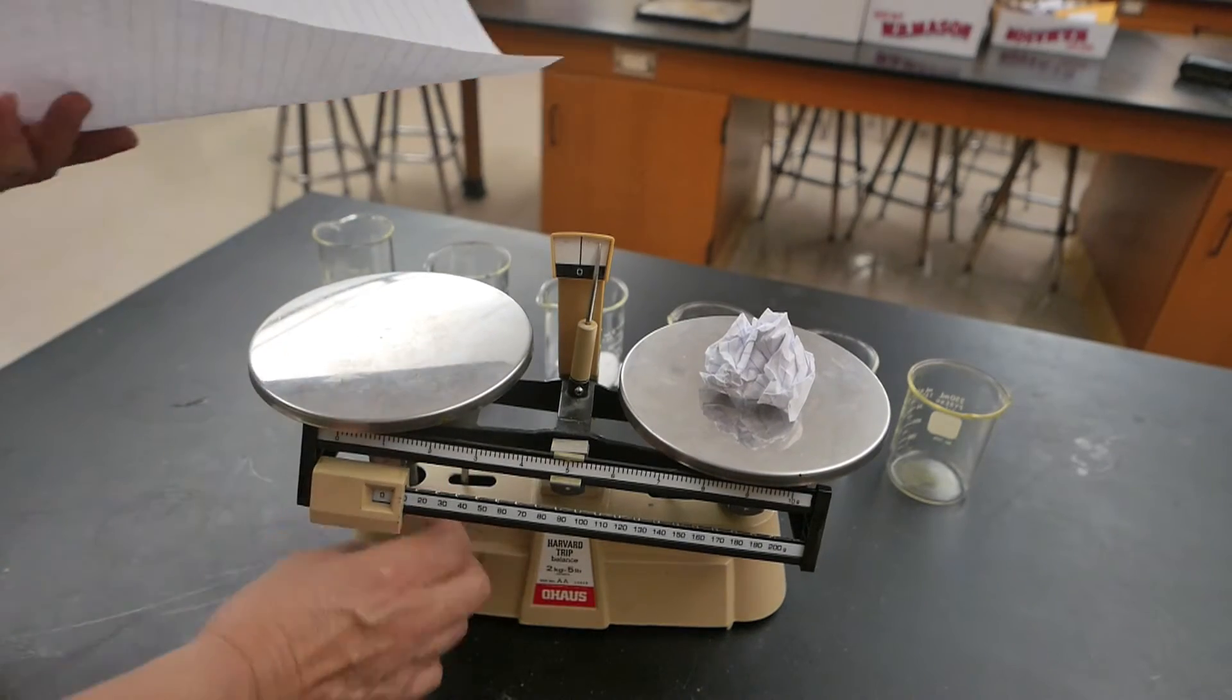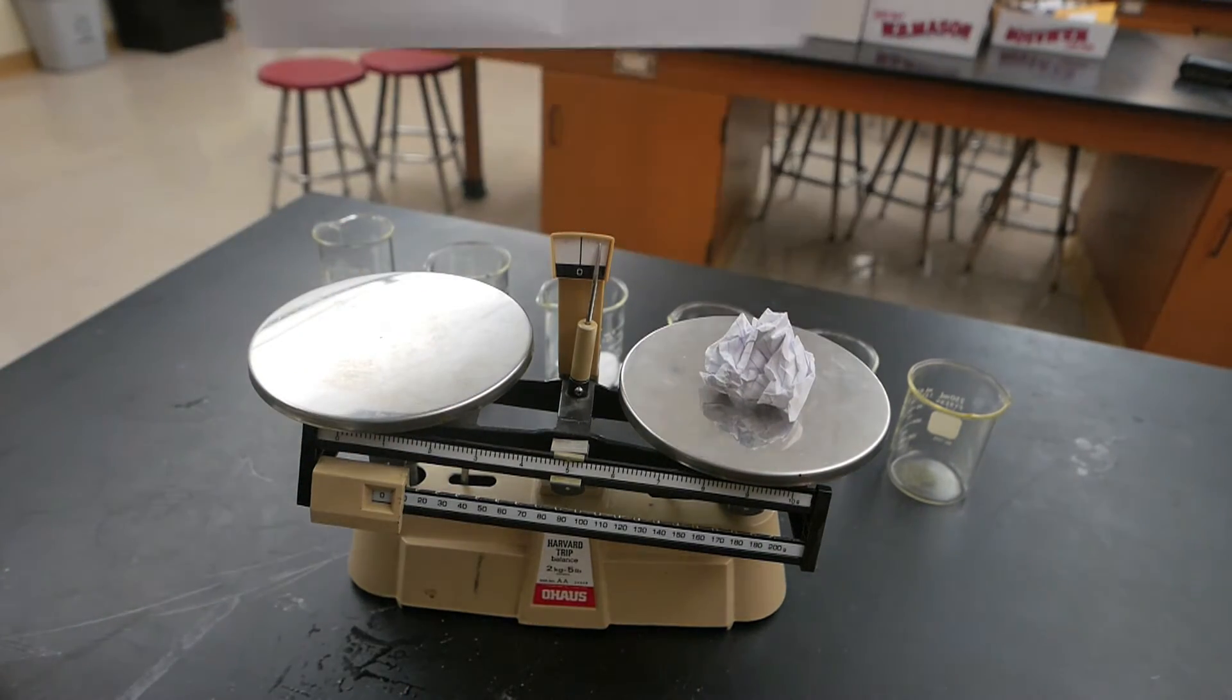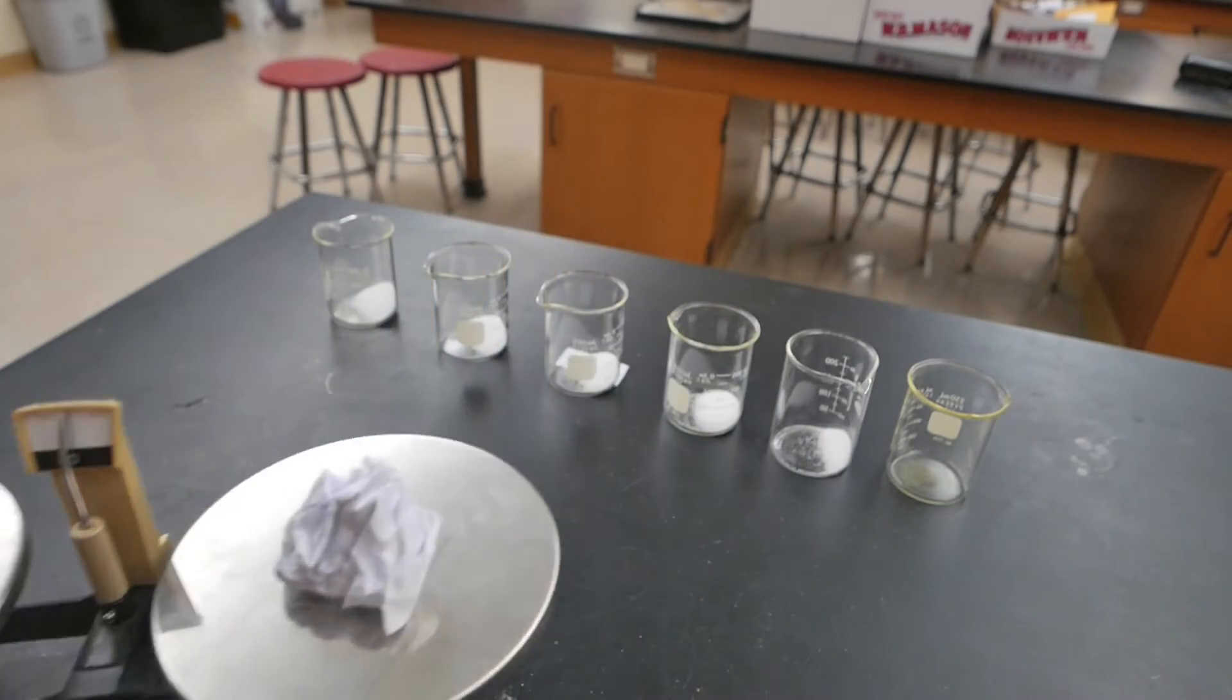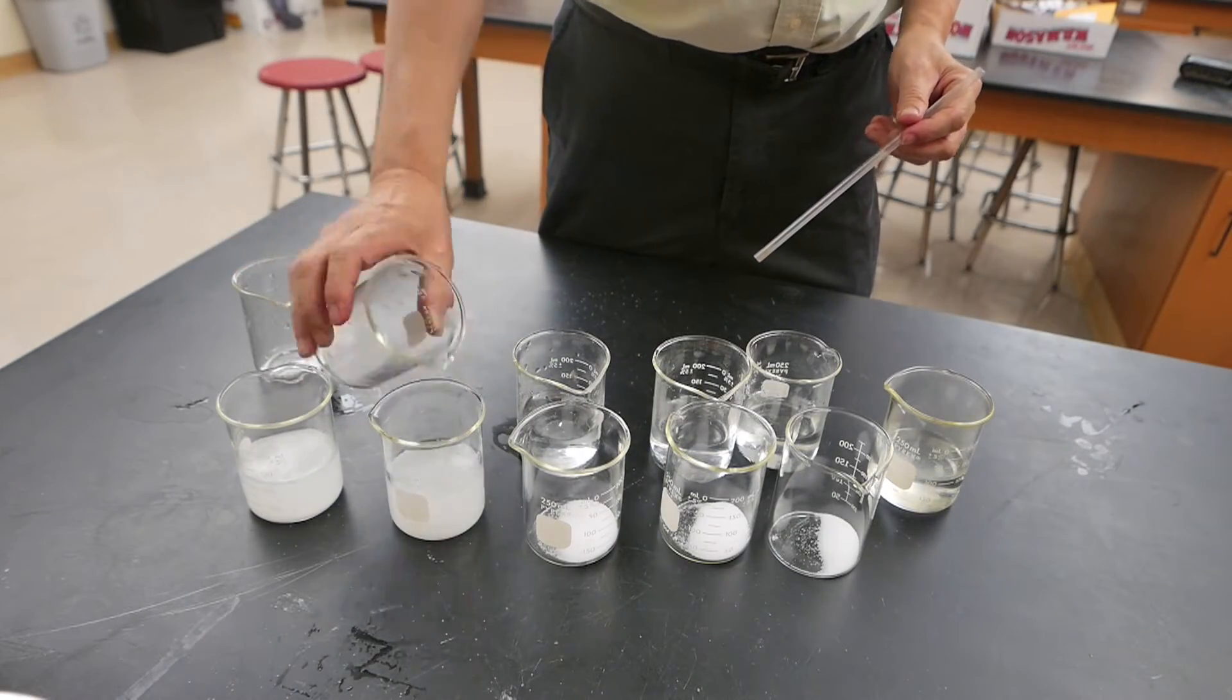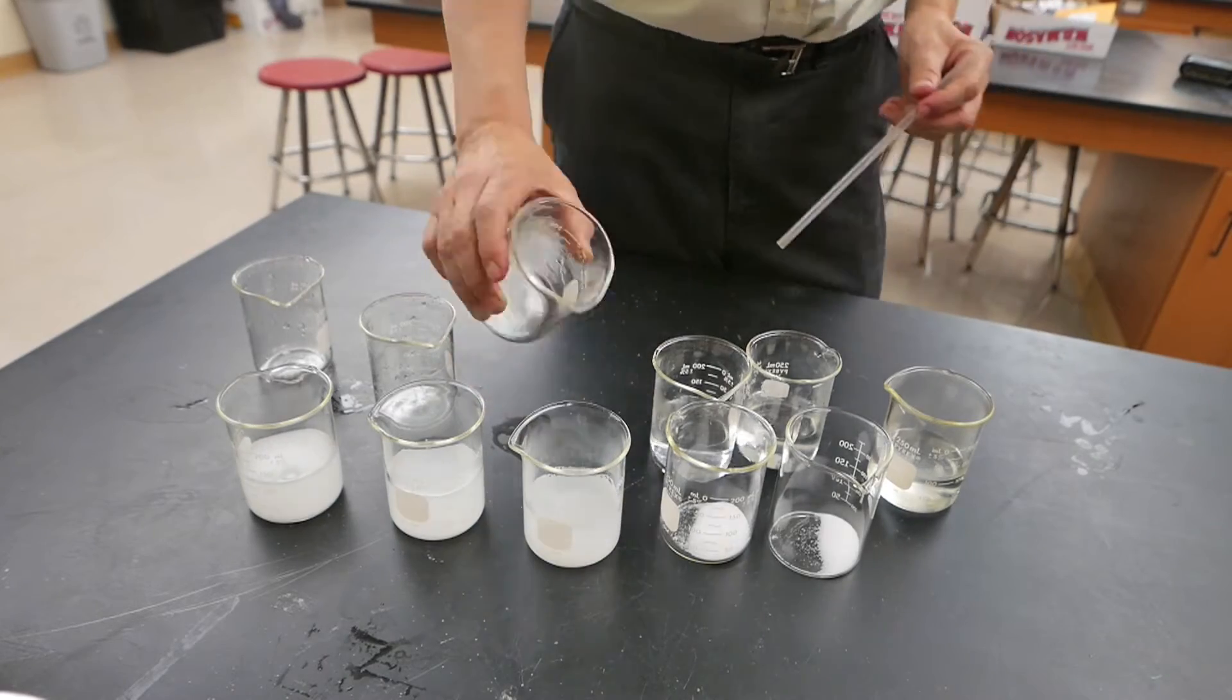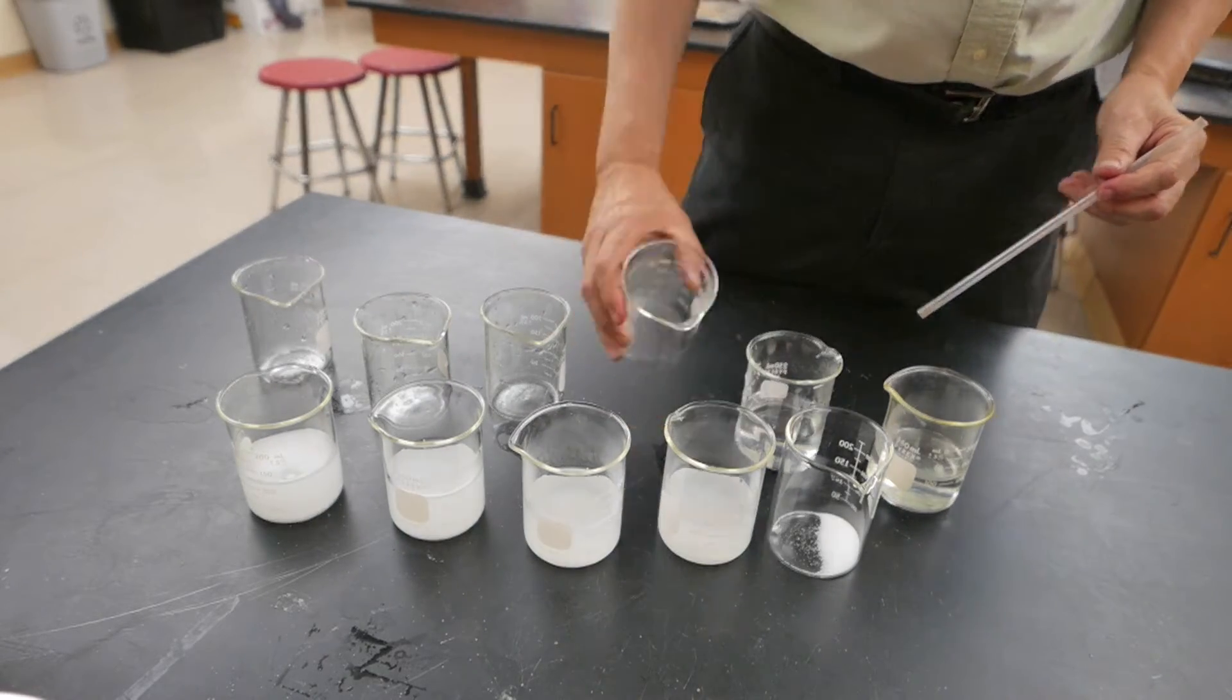My first step will be to measure out the salt according to the table and add them to corresponding containers. Next I'm going to add 100 milliliters of water to each container. Note that the final container doesn't have any salt, it will just be water by itself.